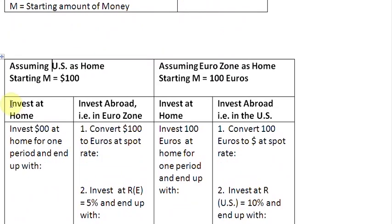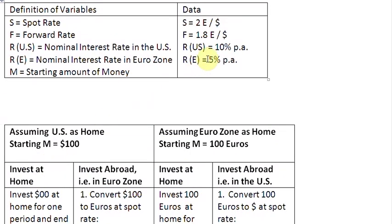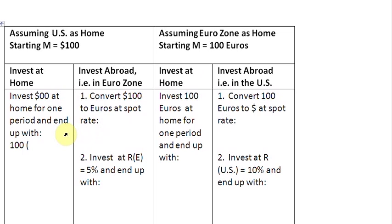Number one: what is going to be your payoff if you invest your money at home? If you invest your money at home, you are going to invest $100 at home. Since the rate of interest in the US is 10%, at the end of one period you are going to end up with $110.